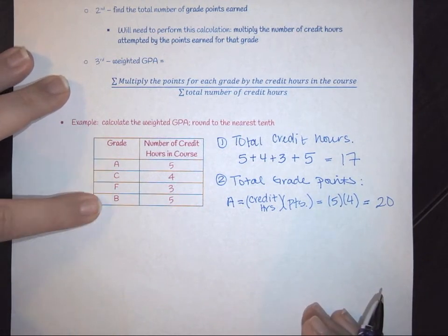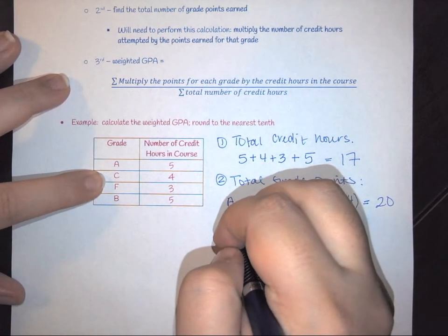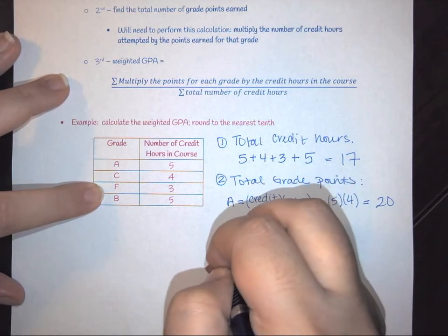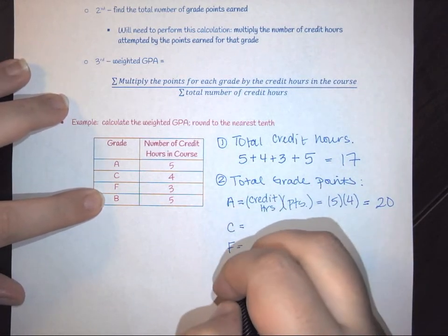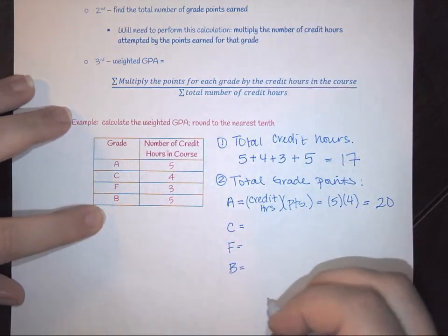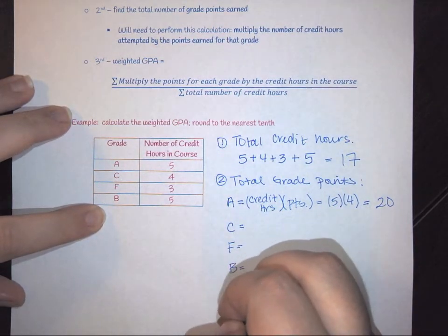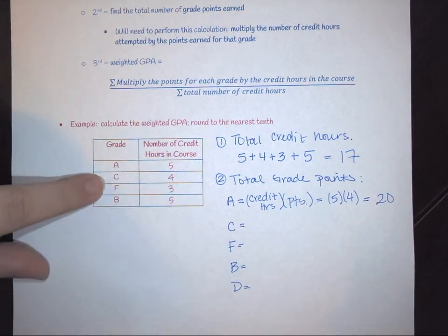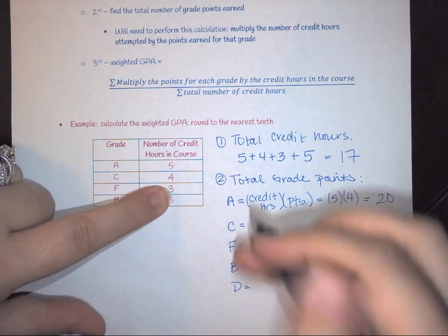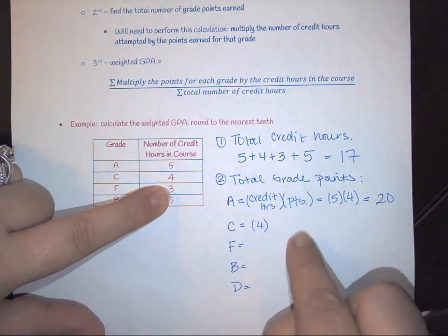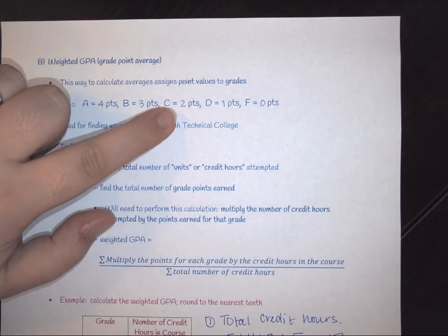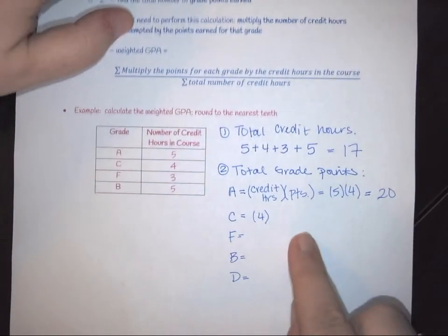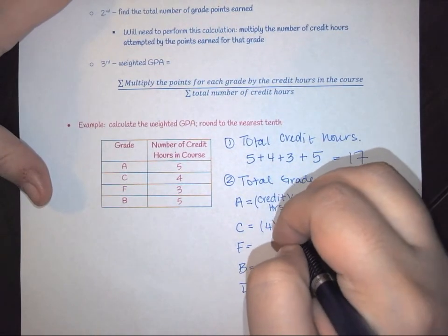So I have a C, I have an F, I have a B. It's a good idea to calculate all of them. For my C, I need to do credit hours, so this would be 4 times the points earned, so I only earned two points for a C, so this is times 2, which gives me a total of 8.